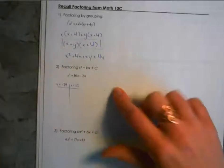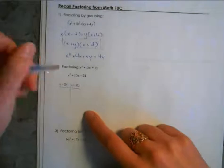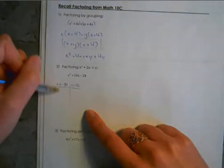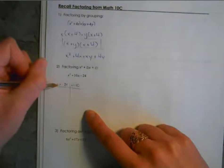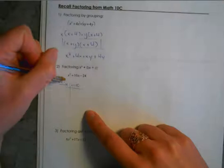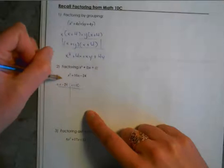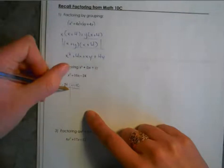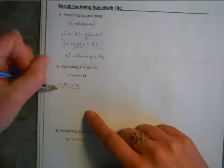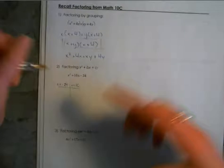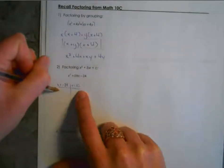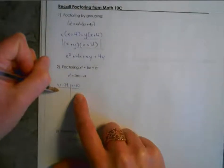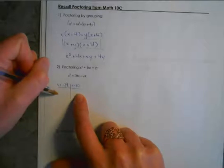What we do here is find two numbers that multiply to make the last value — keep the negative together with it. I like to draw a little table. So I'm looking for two numbers that multiply to equal negative 24, and those same two numbers need to add to make the middle number — positive 10. Depending on how comfortable you are with your multiplication tables, you might be able to guess quickly. Some students prefer to start with 1 times 24, but 1 and 24 have no chance of adding to 10.